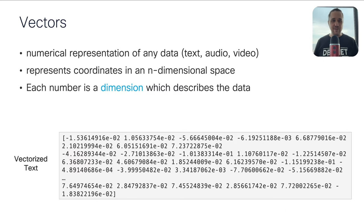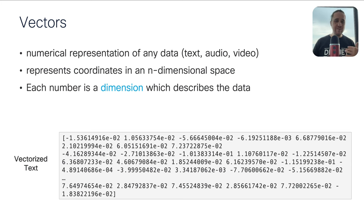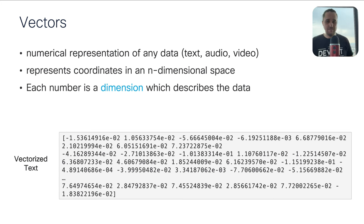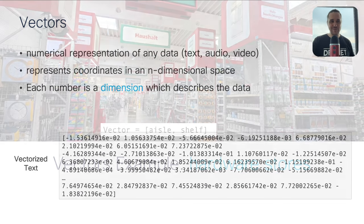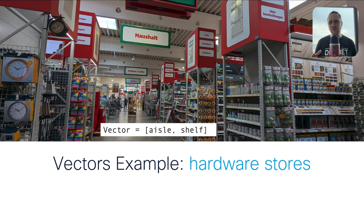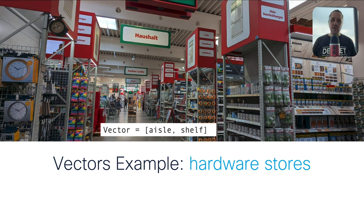The cool thing about vectors is that they are a numeric representation of any data — text, audio, video, images, and so on. All of these represent coordinates in an n-dimensional space. Each dimension is there to describe the data. To the LLM, these numbers are very important to understand what kind of text is semantically similar to the user input. Let me give a visual example: think about being in a hardware store, looking for wooden oil for your wooden desk.